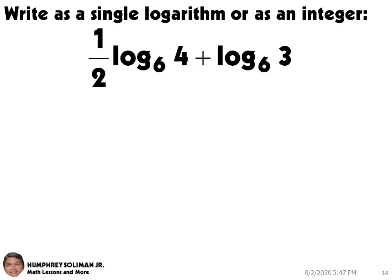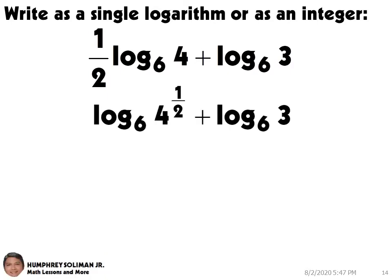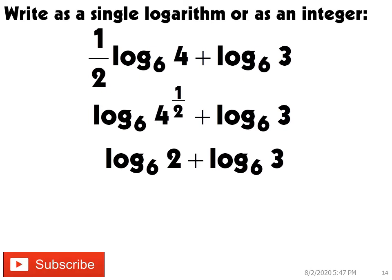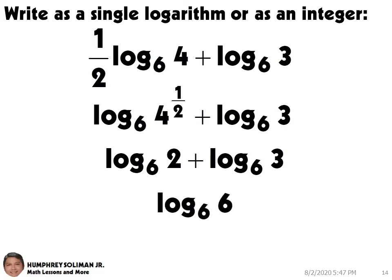Let's try another example: 1 half times log base 6 of 4, plus log base 6 of 3. The 1 half in the first term becomes the exponent of 4. And then, we can simplify this. Simplifying further, we can get log base 6 of 6, and this is equal to 1.